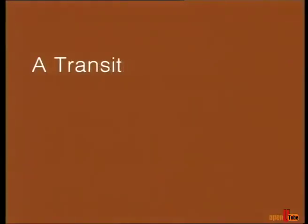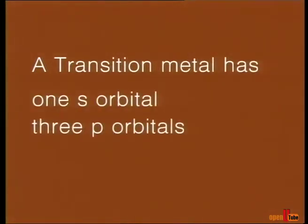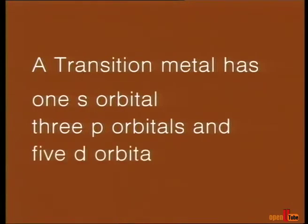What is the maximum number of atoms that can be coordinated to a metal? A transition metal has 1 s orbital, 3 p orbitals and 5 d valence orbitals.